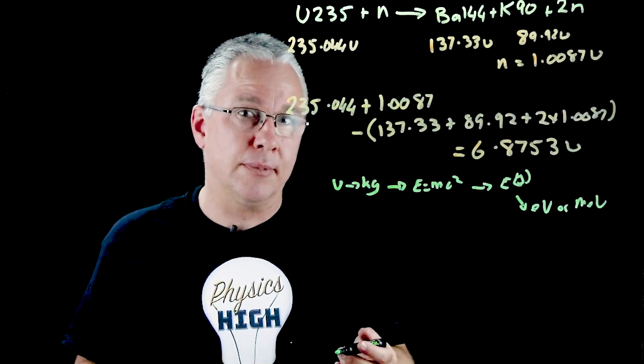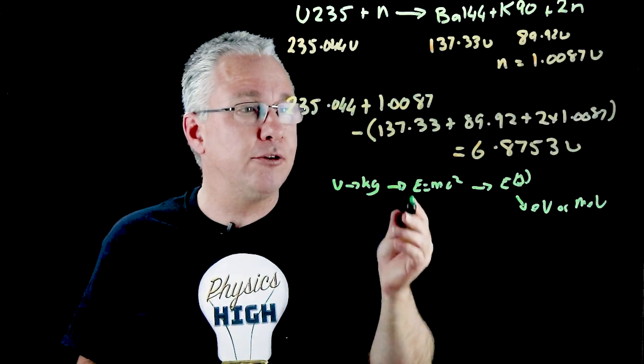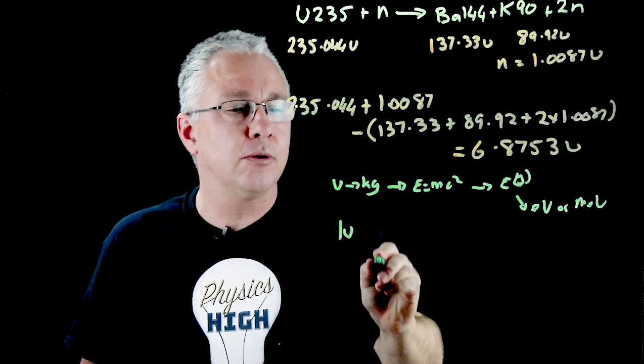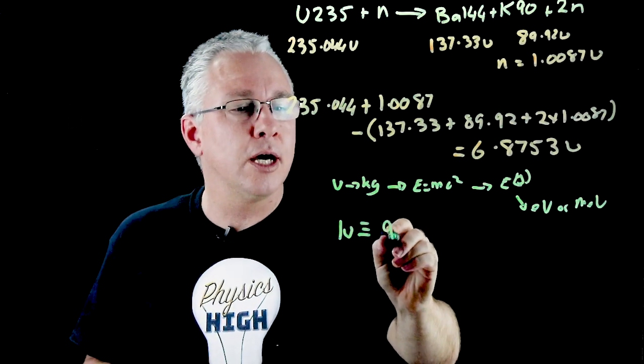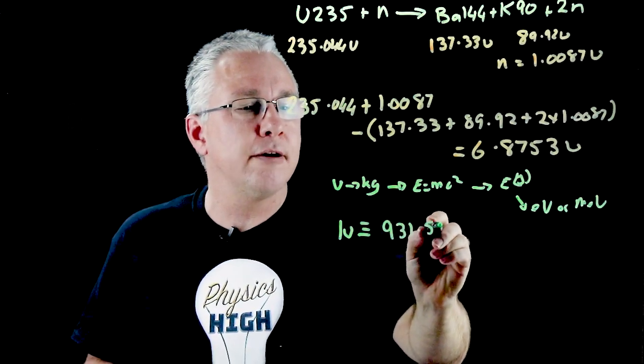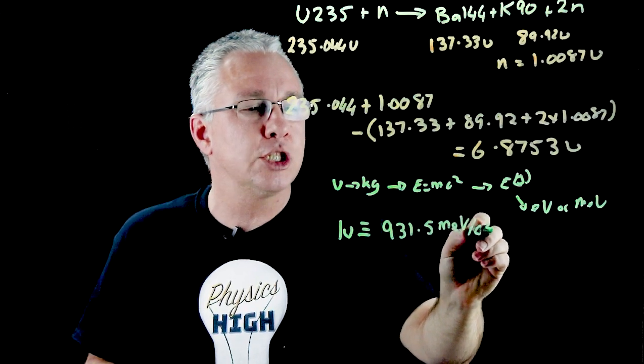You don't have to do that. The fact is that if you have an atomic mass unit of 1u, that mass is equivalent to 931.5 mega electron volts per c squared.